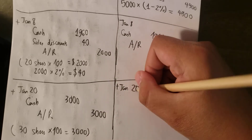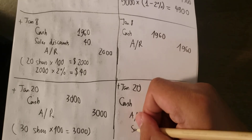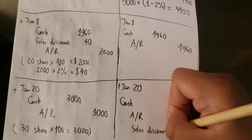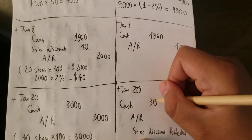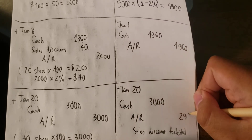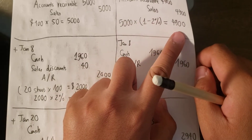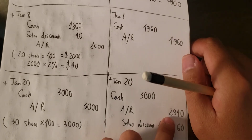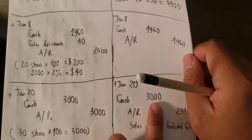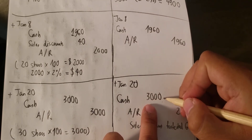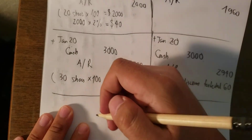For the NET method on the over-10-days payment, we need to reverse the discount. So we record cash, accounts receivable, and sales discount forfeited. We have $3,000 cash, accounts receivable of $2,940, and sales discount forfeited of $60. We calculate this as $4,900 minus $1,960 equals $2,940, and $3,000 minus $2,940 equals $60.